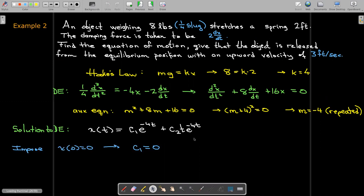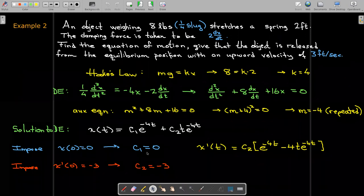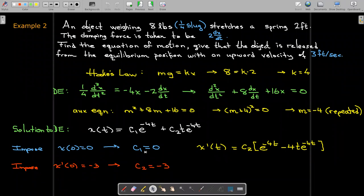So our initial conditions then tell us that it's starting from the equilibrium position. So the initial displacement is zero. So c1 will have to be zero. And then in order to take advantage of the second initial condition, we need the derivative. So let's take the derivative. The initial condition, so we're given an upward velocity. Upward would be negative. Remember, down is positive in this model. So x prime of 0 is negative 3. And that gives us c2 equals negative 3. So in this critically damped system, the equation of motion is just x of t equals negative 3t times e to the power of negative 4t.